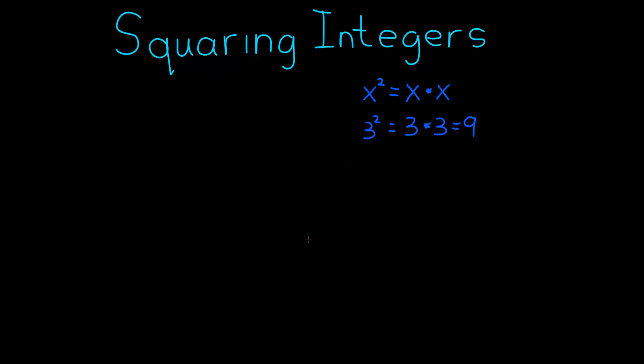Hello, it's Keith from Kinvert, and in this video we're going to be going over squaring integers. So when you see something like this, you'll see like x², and this means squared. Okay, this is three squared.